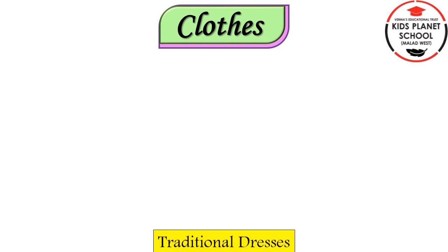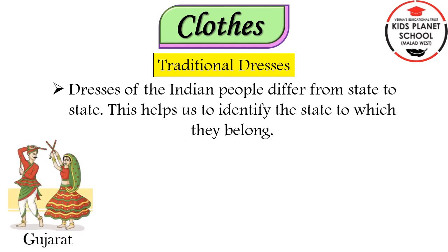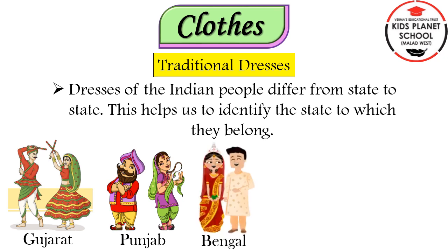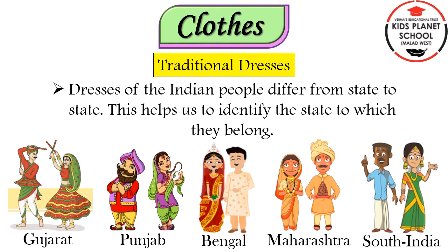Now let us talk about traditional dresses. Dresses of the Indian people differ from state to state. This helps us to identify the state to which they belong. Let us see some examples. This is the traditional dress of Gujarat. This is the traditional dress of Punjab. This is the traditional dress of Bengal. This is the traditional dress of Maharashtra. This is the traditional dress of South India.